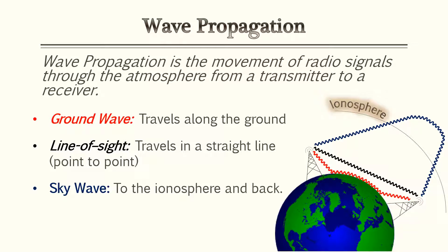Wave propagation is the movement of radio signals through the atmosphere from a transmitter to a receiver. Once the electromagnetic wave exits the antenna, it travels by one of three avenues: ground wave, which means it travels along the ground; line of sight, which means it travels in a straight line from point to point; or sky wave, which means it travels to the ionosphere and back.